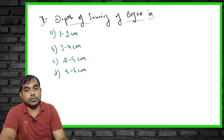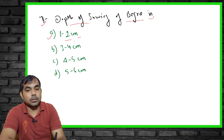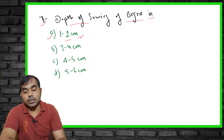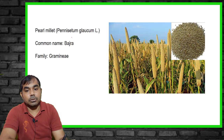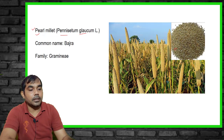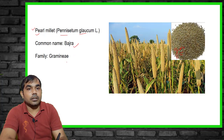The right answer is 1 to 2 centimeters. Bajra is a drought-resistant crop and it is advisable to sow the seed at a shallow depth. Always remember that 1 to 2 centimeters is ideal for Bajra. It is commonly known as pearl millet, and botanically it is known as Pennisetum glaucum, belonging to the grass family.